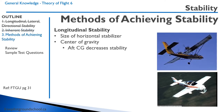Let's discuss some methods of achieving stability. For longitudinal stability — remember, that's around the lateral axis, so pitch — what can affect longitudinal stability? First off is the size of the horizontal stabilizer.